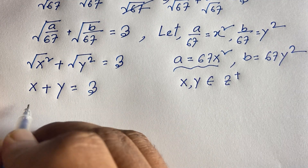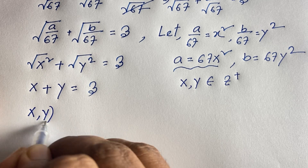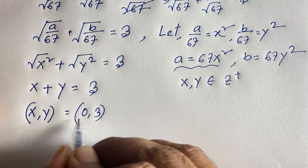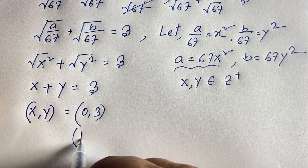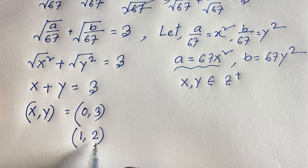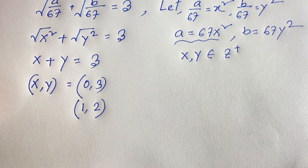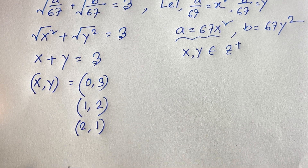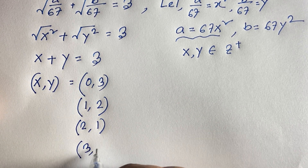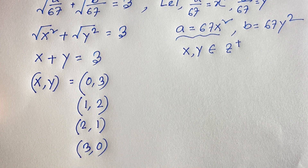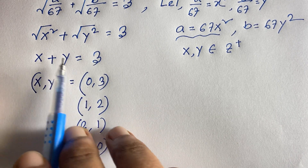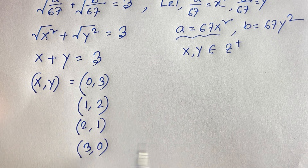Now we find the integer values of x and y. If x = 0, then y = 3. If x = 1, then y = 2 (1 + 2 = 3). If x = 2, then y = 1. And if x = 3, then y = 0. So we have 4 cases: (0,3), (1,2), (2,1), (3,0).